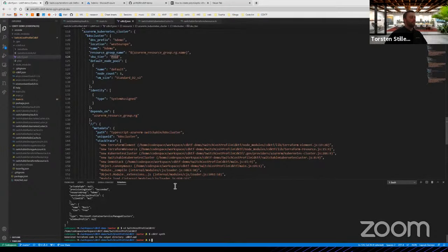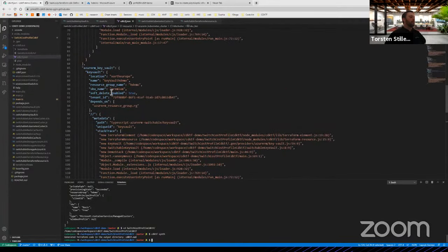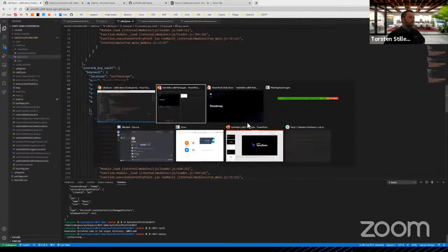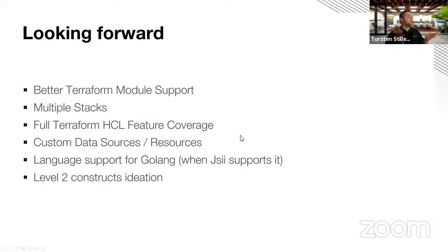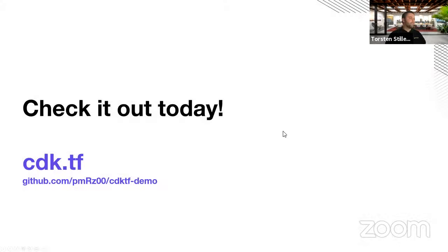Then of course I can do cdktf deploy. Let me quickly talk about the roadmap and then we're done. Looking forward, we want to have better Terraform module support, multiple stacks should be supported soon, full Terraform HCL feature coverage, support for custom data sources and resources, language support for Golang as soon as JSII supports it, and some work to be done on level two constructs. With that, check it out today — it's really easy to get started. Check out cdk.tf, there are a lot of getting started guides. You can also take a look at the CDKTF demo I just showed you and try it out yourself. Thanks.